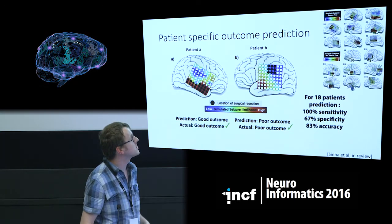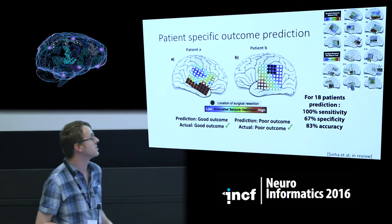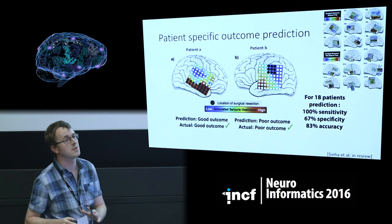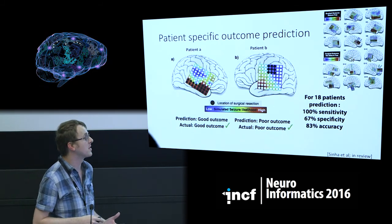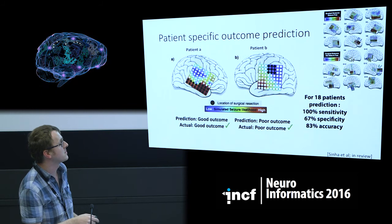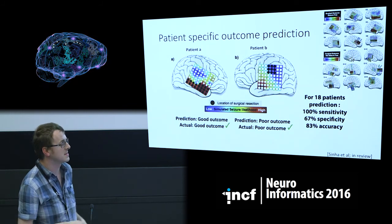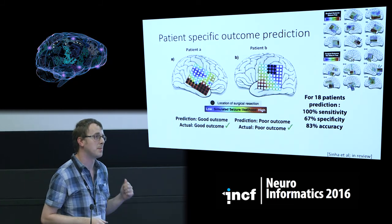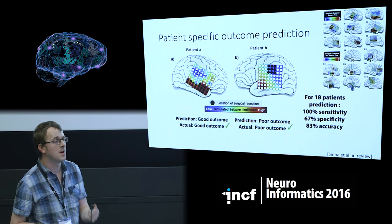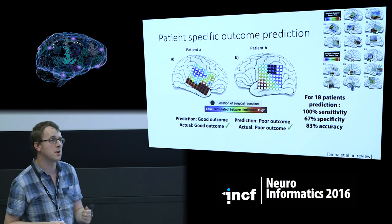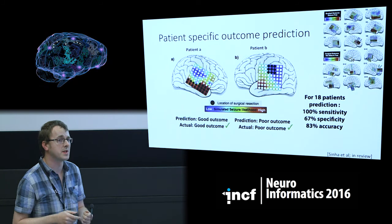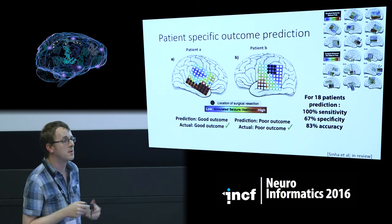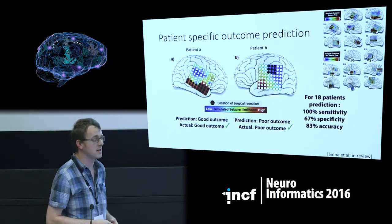We then did this for another 16 patients, giving 18 patients total, achieving 83% accuracy. When you consider that clinicians only get around 70% accuracy, that's quite good. Importantly, perhaps the best figure is the 100% sensitivity — meaning in all patients where we predicted a bad outcome, they actually had a bad outcome. That's crucial because it means we can say to the surgeon: here's what we think you should be doing instead, operating on this part, which the surgeon can investigate further.